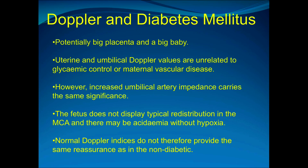A note about Doppler use in particular obstetric situations. In diabetic mothers, you have a potentially large placenta and a large baby. Uterine and umbilical Doppler values are unrelated to glycaemic control or maternal vascular disease. However, increased umbilical artery impedance carries the same significance, but the fetus does not display typical redistribution in the middle cerebral artery — there may be acidaemia without hypoxia. Therefore normal Doppler indices do not provide the same reassurance as in the non-diabetic mother.